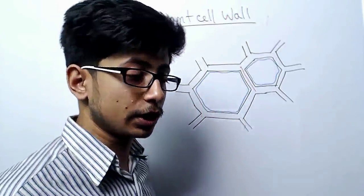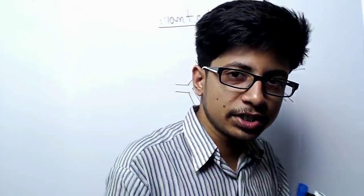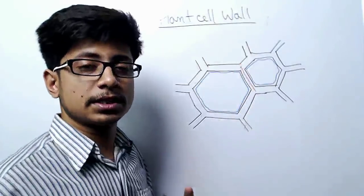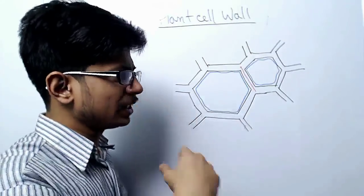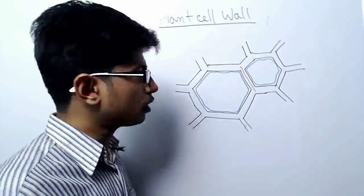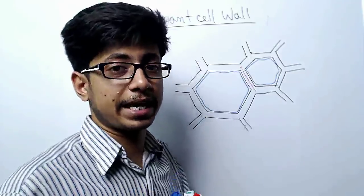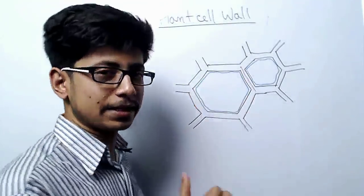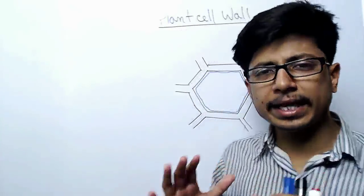In plant cells, the cell wall is a very interesting and important structure that provides structural rigidity and support to plants. Among eukaryotes, the cell wall is only found in plants — and in some algae — but in prokaryotes, such as bacteria, cell walls can also be present. However, the cell wall in eukaryotes is a prime feature of plant cells.